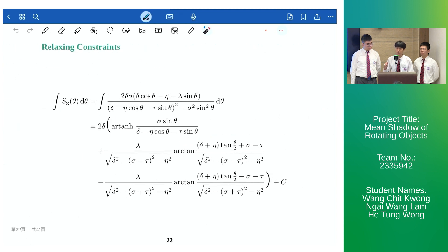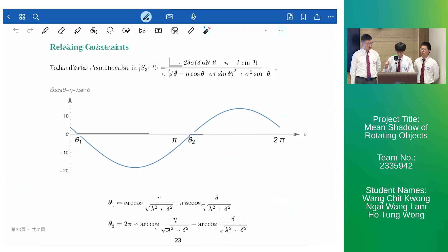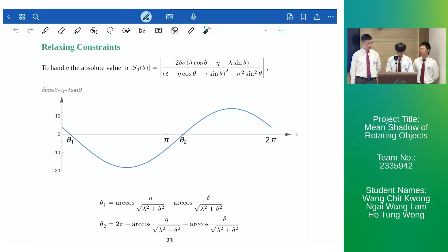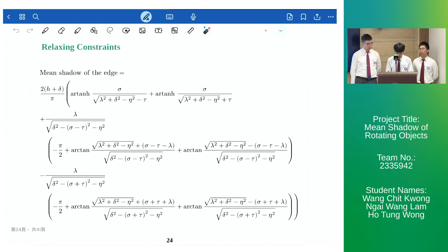The anti-derivative of s3 theta can be calculated in a similar manner to s1 theta which gives us the expression with the first part as an arc hyperbolic tangent and the second part having two arc tangents. Once again to handle its absolute value we determine its sign changing points given by theta1 and theta2. And after plugging in we have the mean shadow of the edge, an expression with like four arc tangents, not exactly so pleasant right?